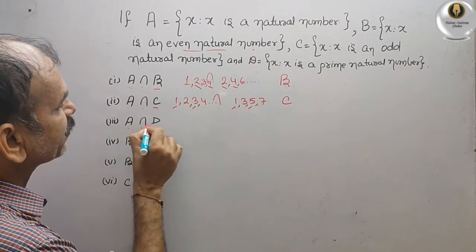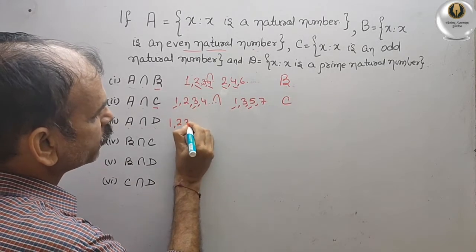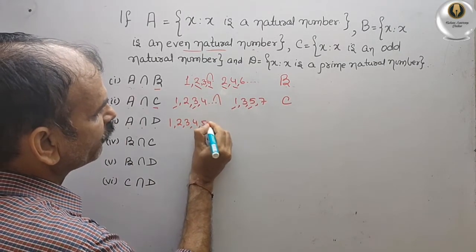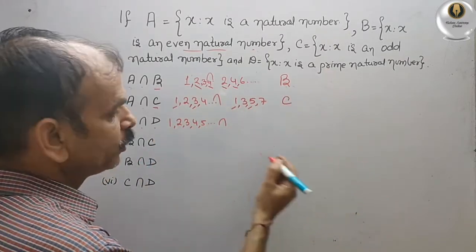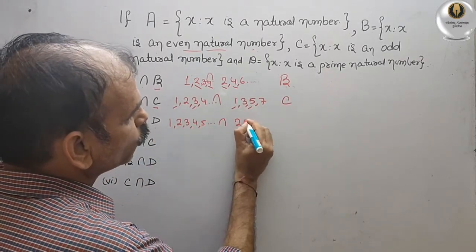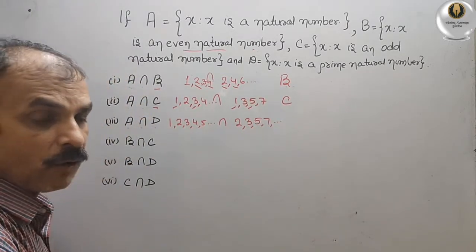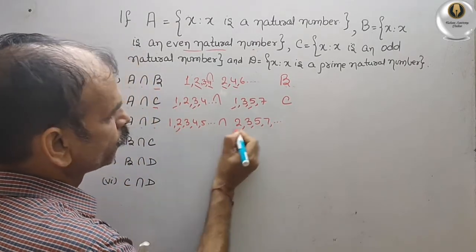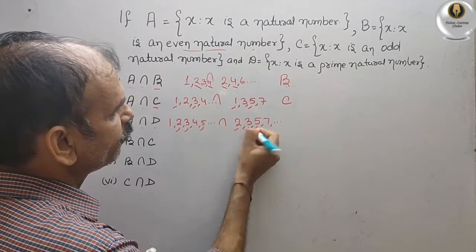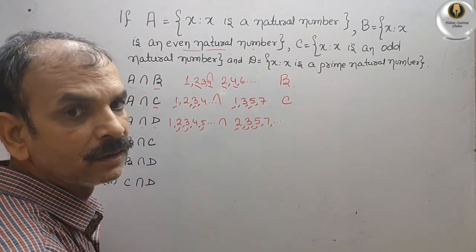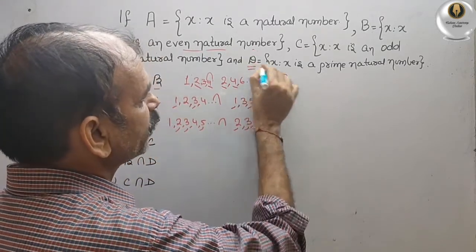Next, A intersect D. A is 1, 2, 3, 4, 5 and so on. D is prime numbers, so prime numbers are 2, 3, 5, 7 and so on. If you see here, you will get 2, 3, then 5, and so on. You will get only the prime numbers. That means your answer is D only.